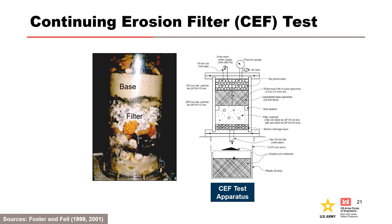Foster and Fell also developed a device to evaluate the potential for continuing erosion by modifying the no-erosion filter test. To evaluate continuing erosion, they re-ran the no-erosion filter test with a coarser filter. After the test, the water passing through the filter was collected and the eroded materials were dried and weighed to determine the loss of the base soil required to seal the filter. To ensure that continuing erosion was taking place, they also used thicker base soil specimens to allow for greater erosion losses. This process was repeated with progressively coarser filters until the filter was not sealed.